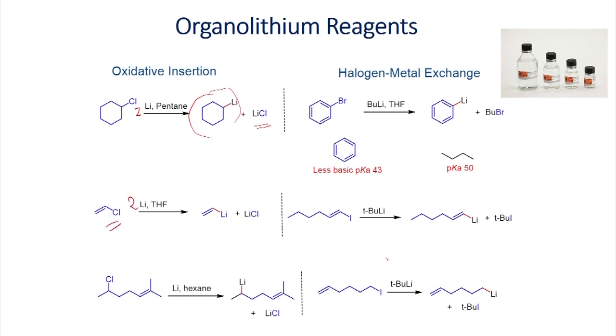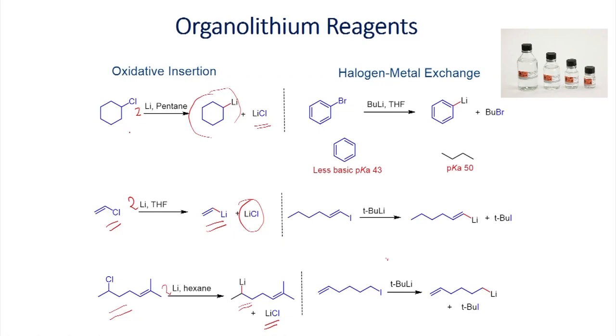Similarly, you can also react vinyl chloride with two equivalents of lithium to give the vinyl lithium reagent and lithium chloride as a salt. Alternatively, you can take an alkyl chloride which has a double bond and react it with two equivalents of lithium to give the alkyl lithium as well as lithium chloride. This is an example of an oxidative insertion reaction, similar to the Grignard reagent case where alkyl halide reacts with magnesium to generate an organomagnesium halide.